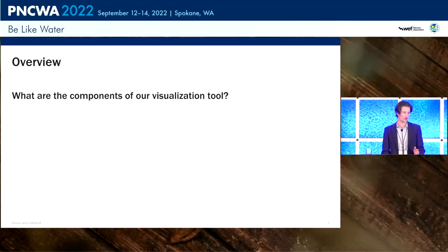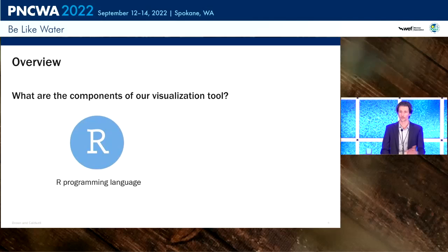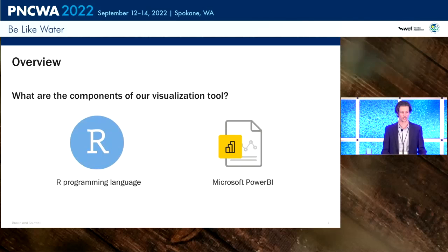Our visualization tool has two main components. The first is the backend: R. R is a programming language — like Python or C++ — and we run it in RStudio. I'll talk more about why we chose that language in a moment. The other component, the user-facing side, is Microsoft Power BI. It's part of the Microsoft suite of tools and is a really nice platform for making sense of, filtering, and visualizing different kinds of data.